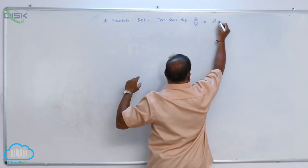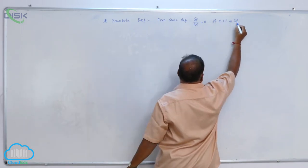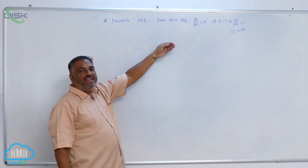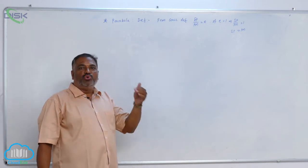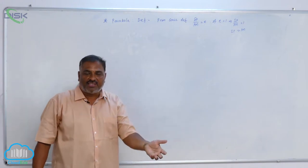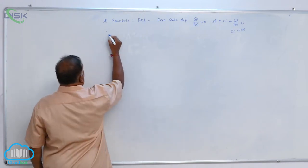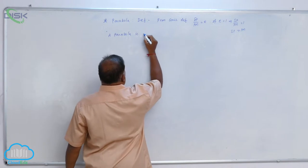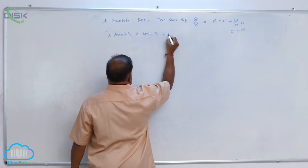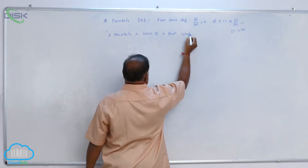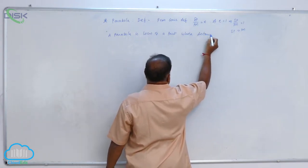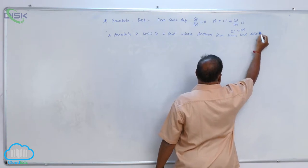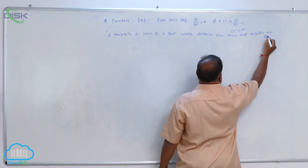That means if e is equal to 1, the conic becomes SP divided by PM equal to 1, or SP is equal to PM. That means a parabola is the locus of all points whose distances from the focus and directrix are equal.